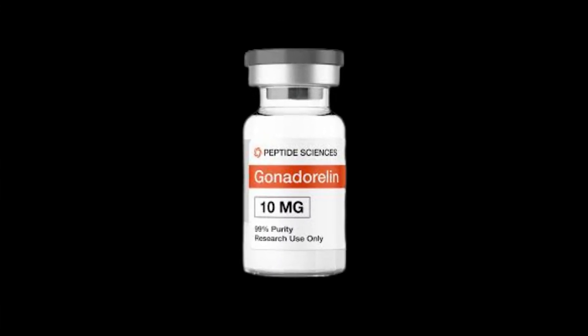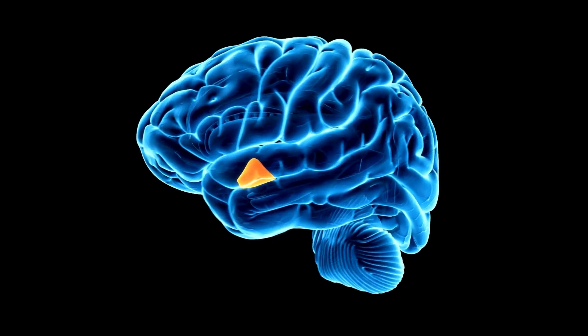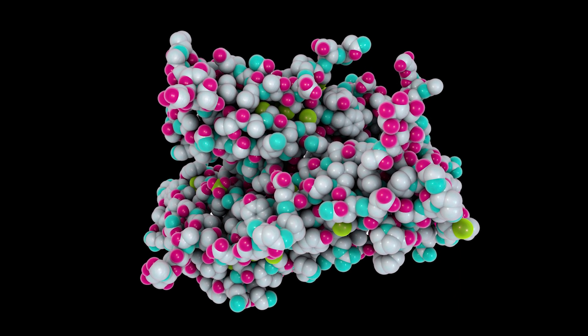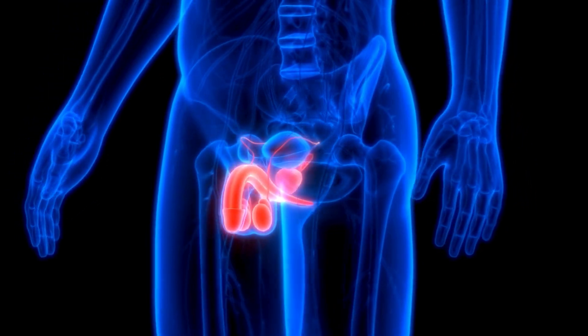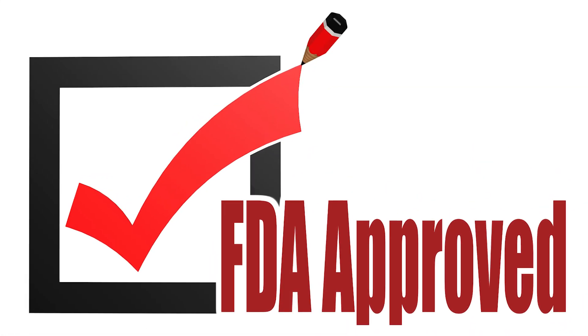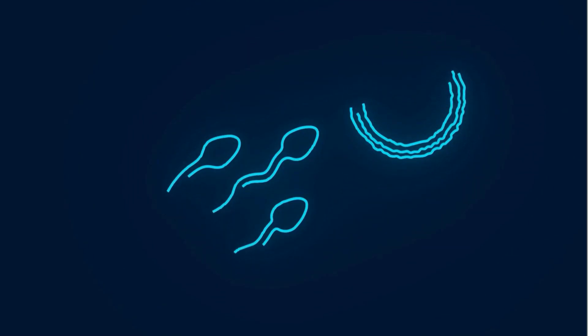Gonadurilin is a synthetic analog of gonadotropin-releasing hormone, GnRH, which is naturally produced in the hypothalamus. GnRH plays a critical role in regulating the release of two key reproductive hormones: luteinizing hormone, LH, and follicle-stimulating hormone, FSH. These hormones are essential for the development and function of the gonads — ovaries in females and testes in males. Clinically, gonadurilin is used to treat reproductive hormone imbalances, infertility, and certain endocrine disorders. It is also used diagnostically to assess pituitary function, and is FDA-approved for specific indications.